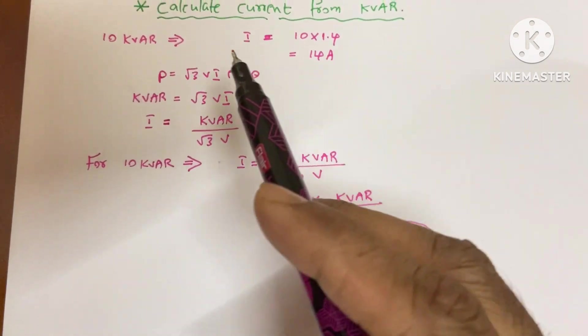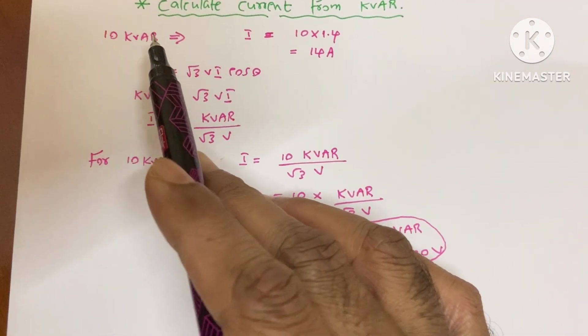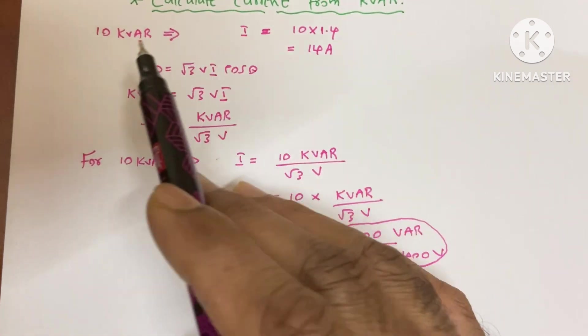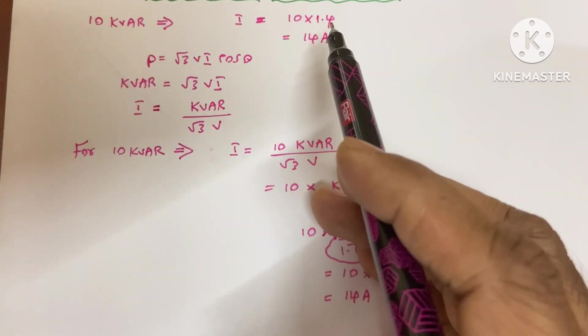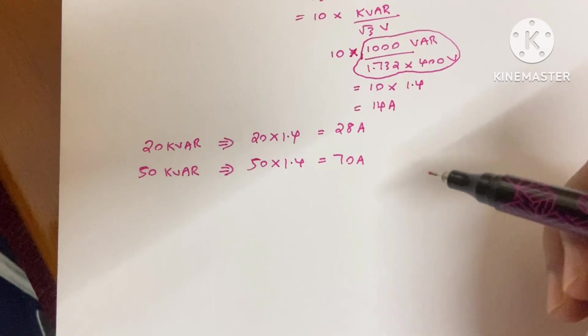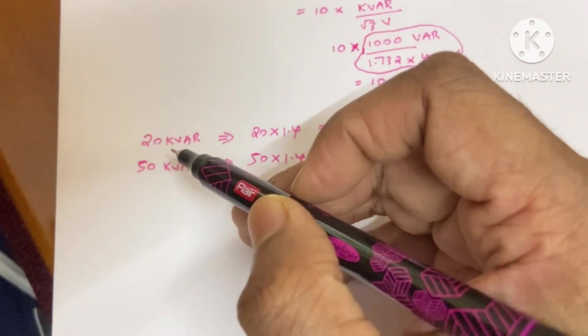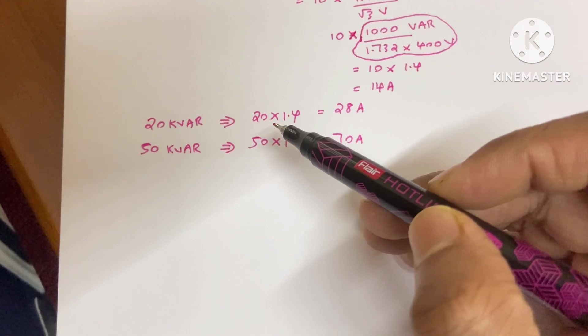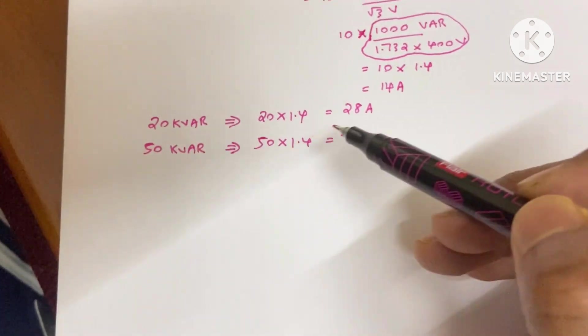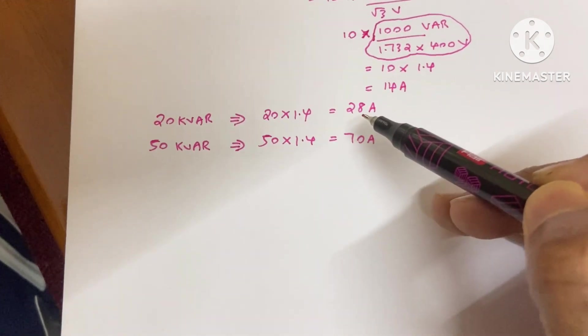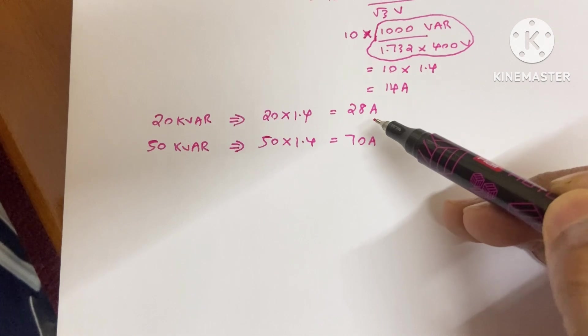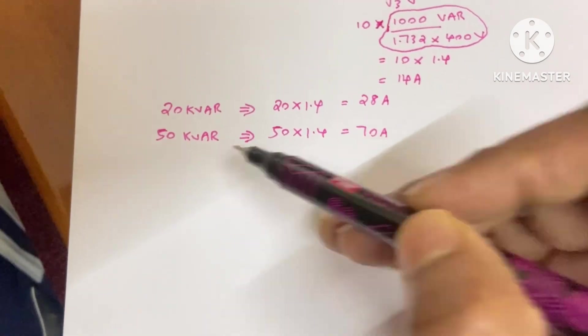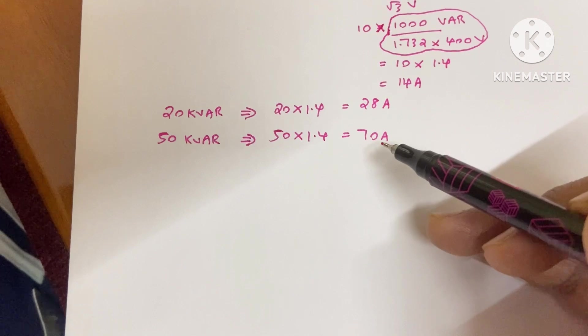Whenever you have a KVAR value, to find the current, you multiply it by 1.4. Suppose you have a 20 KVAR capacitor bank, then simply multiply 20 by 1.4 to get 28 amperes. If your capacitor bank is 50 KVAR, you'll get 70 amperes.